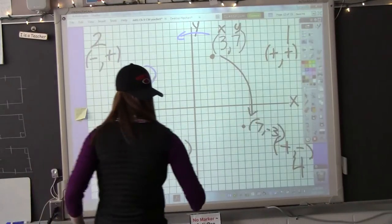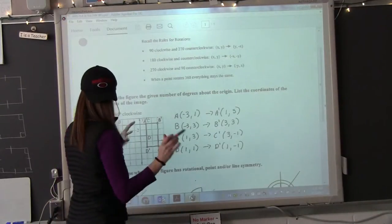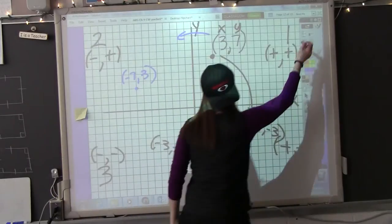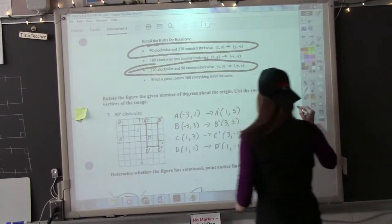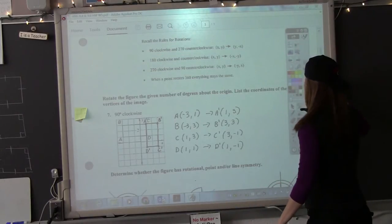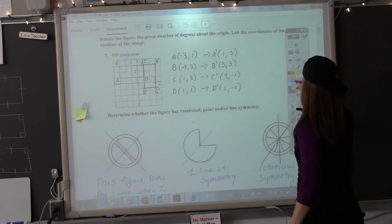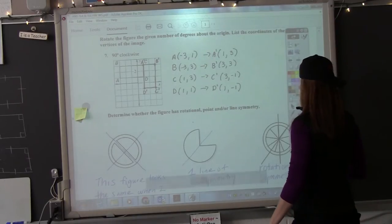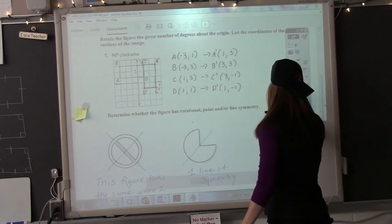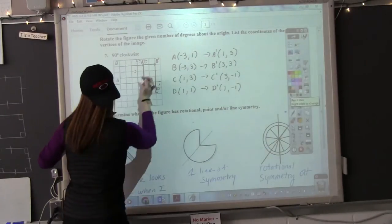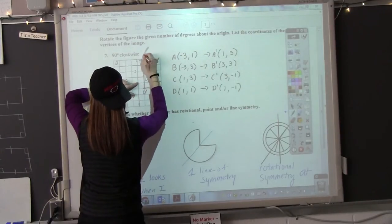Let's go over our homework problem using this new method. I think it's easier than using the rules, but if you like the rules, use the rules. We're going to start with A. A, on your homework. Everyone have your homework out? A is at 1, 3 currently.